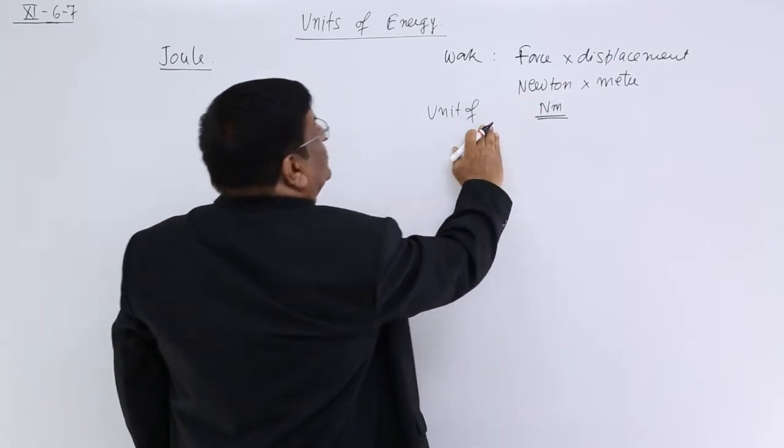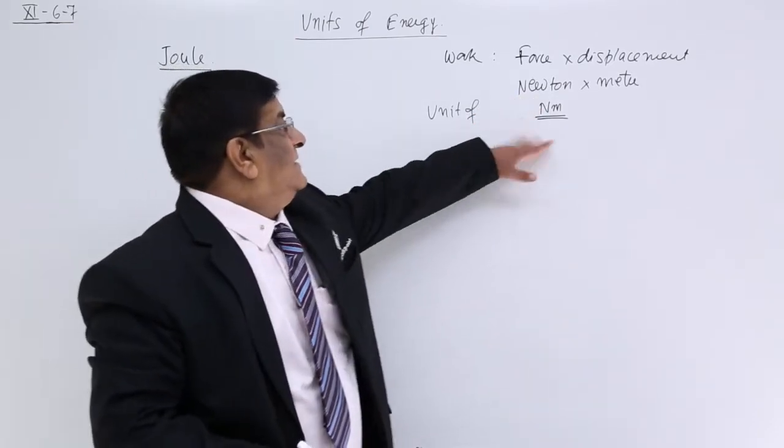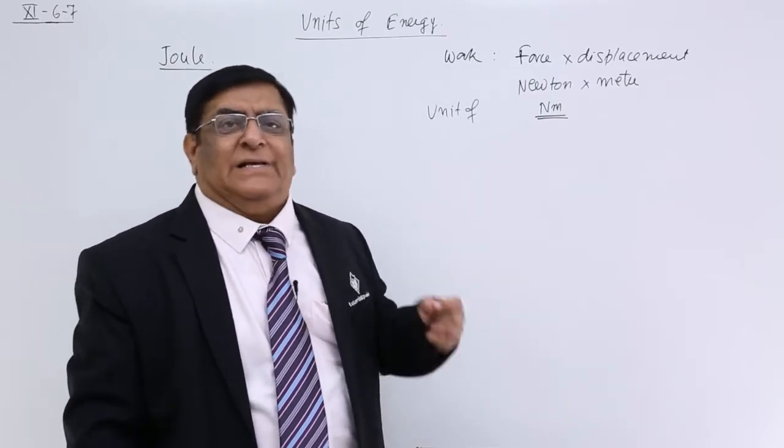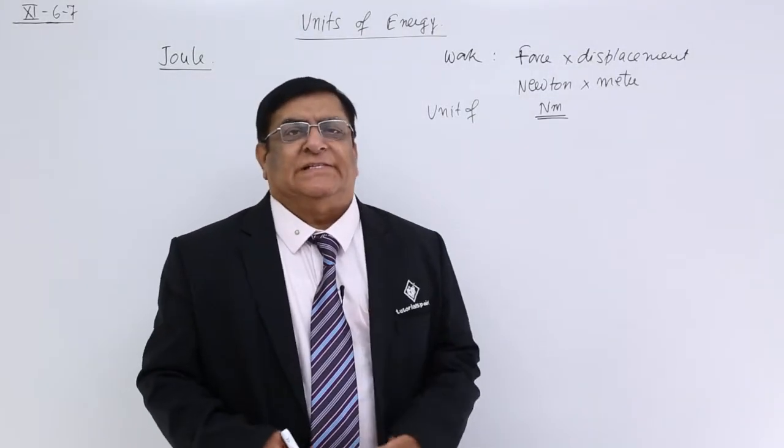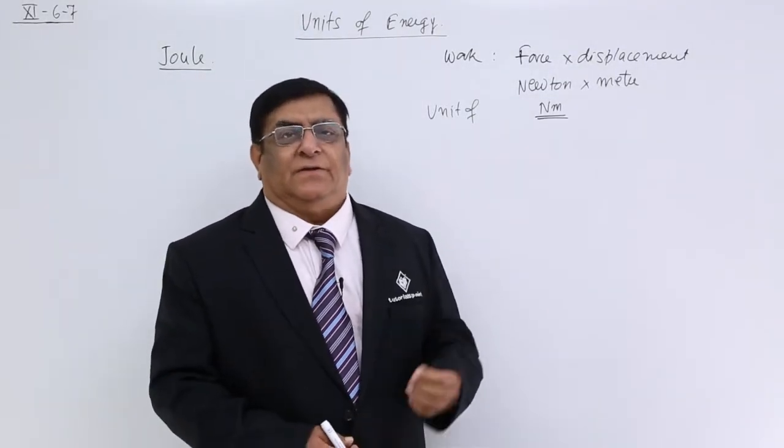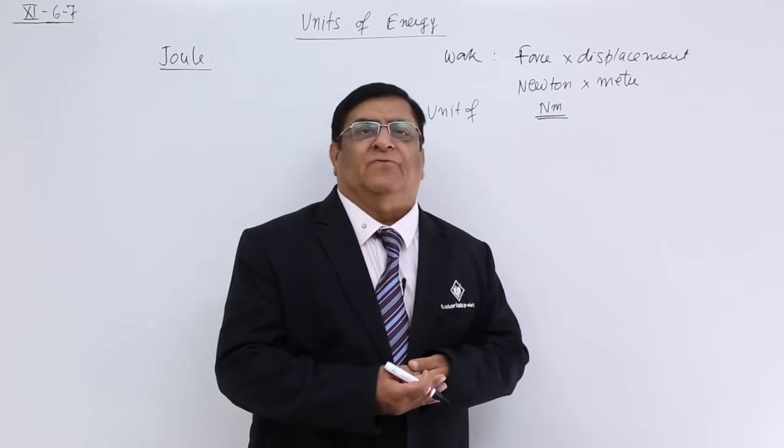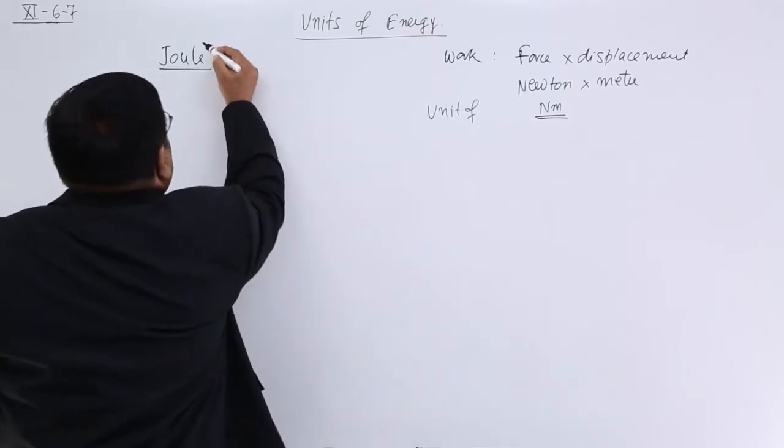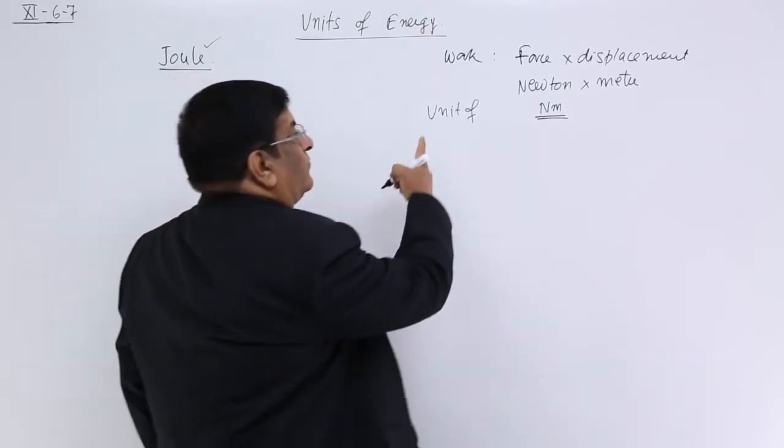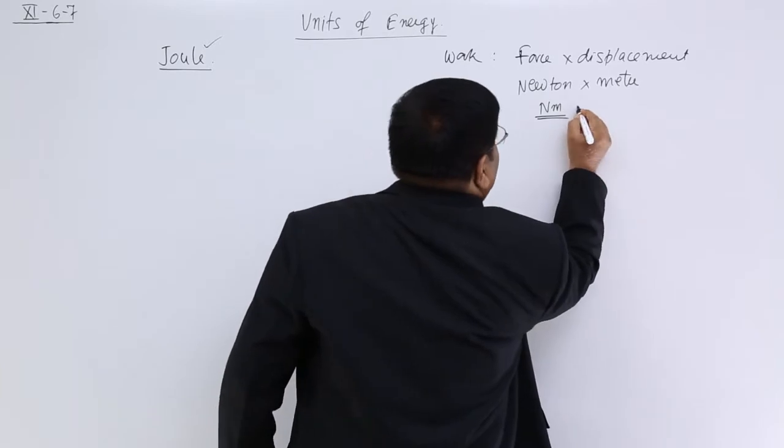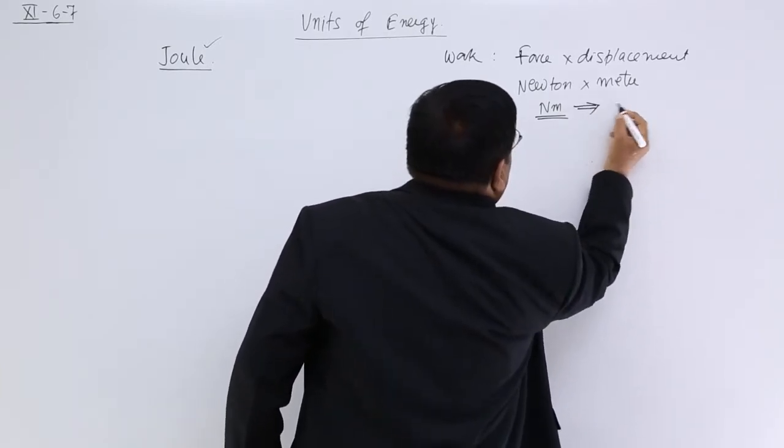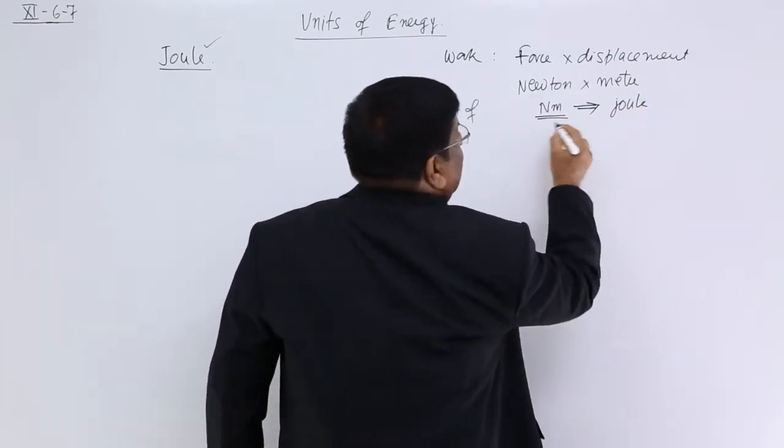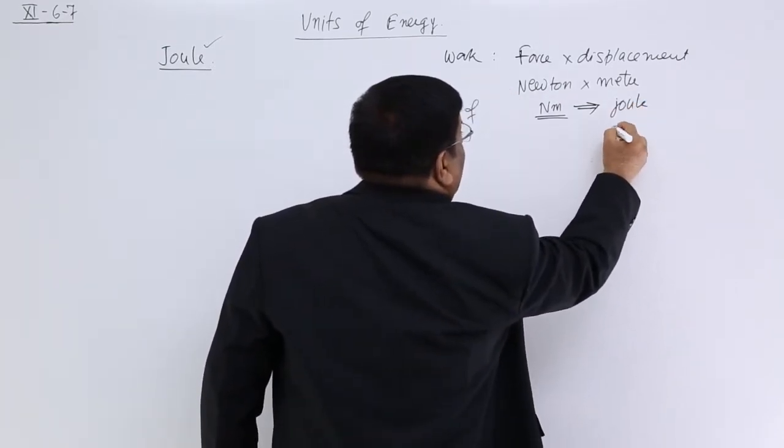But we have to use it at so many places. It is such a popular physical quantity that we want to give it a name, a separate name. The separate name was given to honor the scientist who has done maximum work on it and that scientist was Joule. So we gave it the name Joule. So this Newton meter is derived with a new name, Joule. And it has got a symbol, capital J.